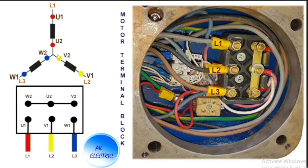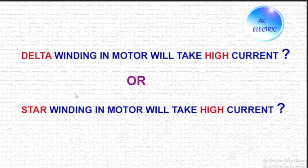In the motor terminal block, U1, V1, W1 are the starting points connected to the power supply, while the ending points W2, U2, V2 are short-circuited by a jumper plate. This jumper plate is now in the vertical position — remember, in delta connection the jumper plate was in the horizontal position. This is how star connection looks.